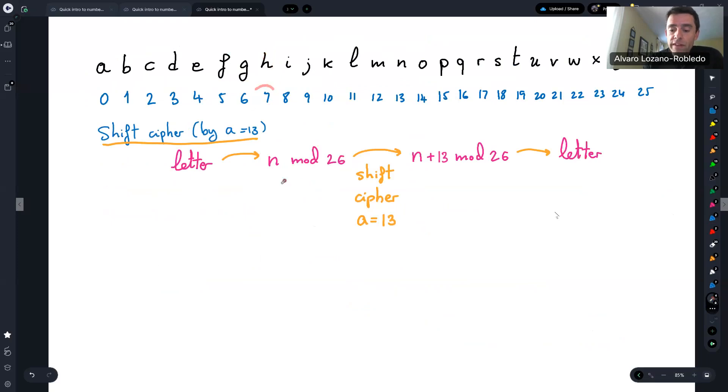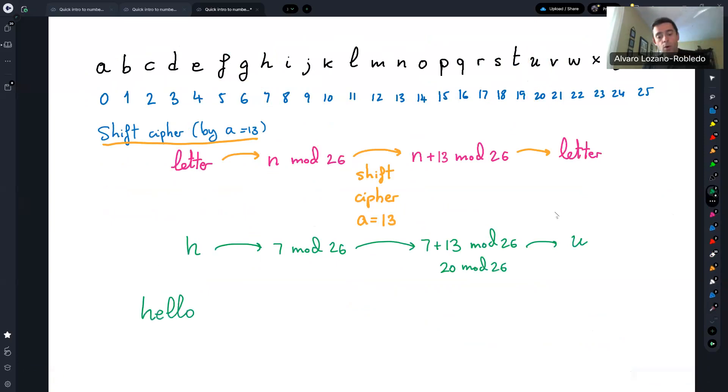So we take H, we take the number seven. Let me do it maybe right here as we go. So I'll take the letter H, converted to seven modulo 26. And then the shifting happens here. I'm going to shift seven by 13 elements. So seven plus 13 and reduce modulo 26. That is just 20 modulo 26. And then go back to my table and see what is 20. 20 corresponds to the letter U. So U is going to go to, or the number 20 is going to return the letter U.